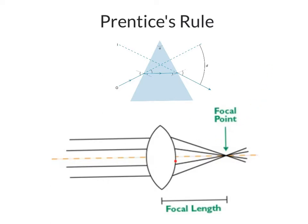However, sometimes a lens can act like a prism and that's very important. This relationship is called Prentice's Rule.